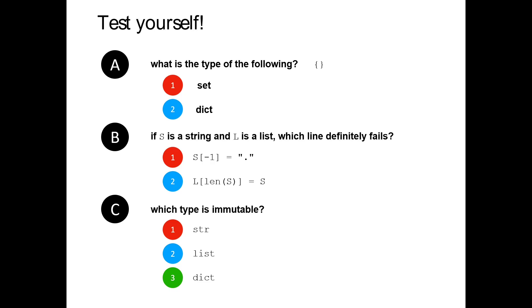The answer is string for question C — immutable. Now let's look at question B: if s is a string and l is a list, one of these will definitely always fail and the other one might fail or might work. Take a guess. The one that's going to fail is s[-1] equals period — it looks like we're taking the last letter of a string and replacing it with a period, but this doesn't work because strings are immutable. This will always fail — Python does not let us change strings.